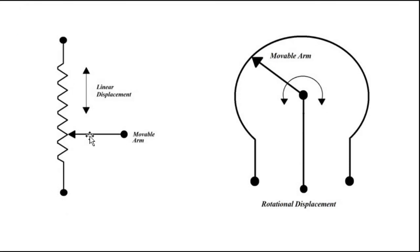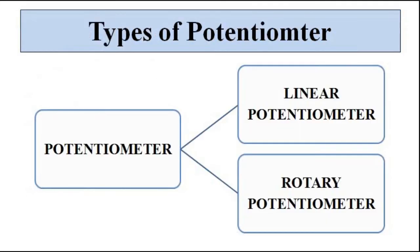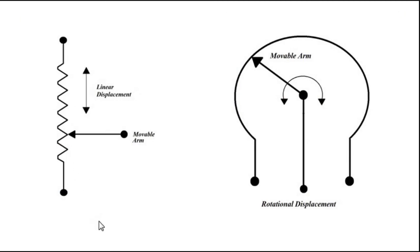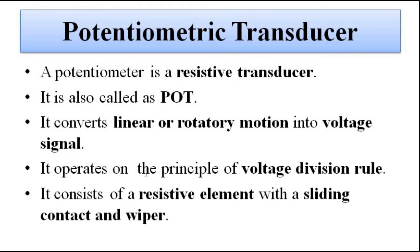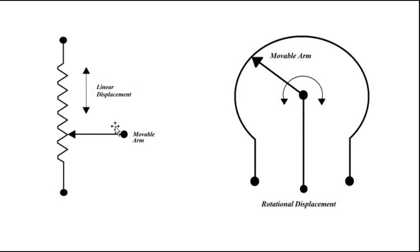The resistive element has a sliding contact which moves either in a linear way, straight and to-and-fro, or in a rotational motion. This is the resistive element, and this is the movable arm called the wiper. The potentiometer is of two types: the linear potentiometer and the rotary potentiometer. Linear is straight-line motion, and rotary is 360-degree motion. For medical measurements, this movable arm is connected to the body part or the point where displacement is to be measured.